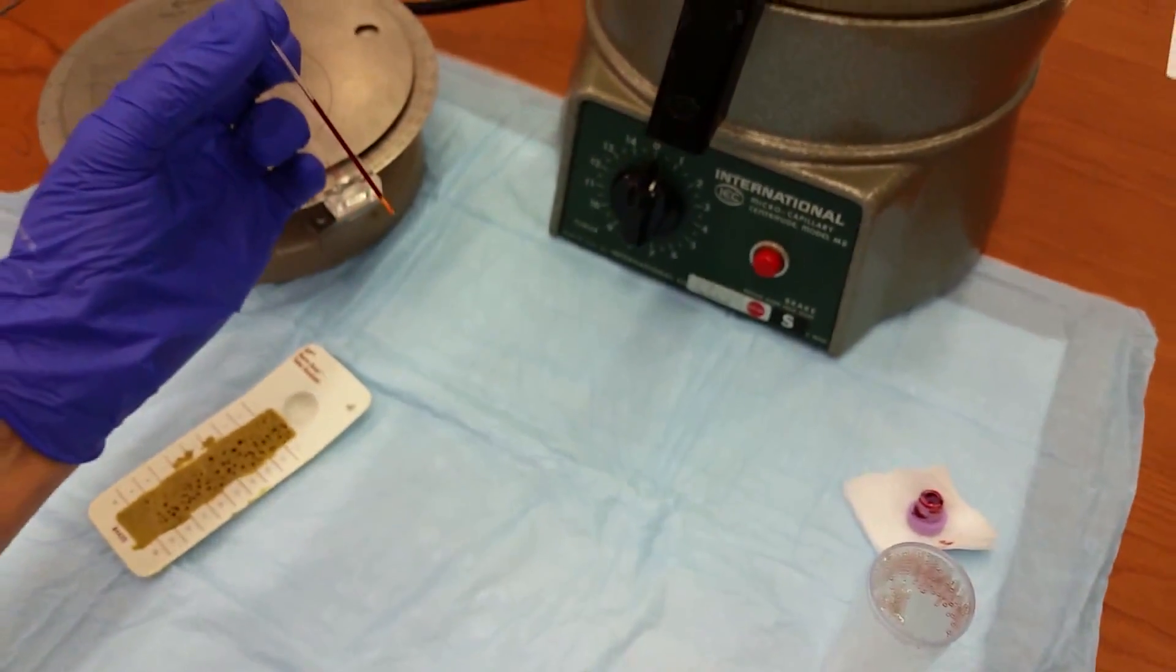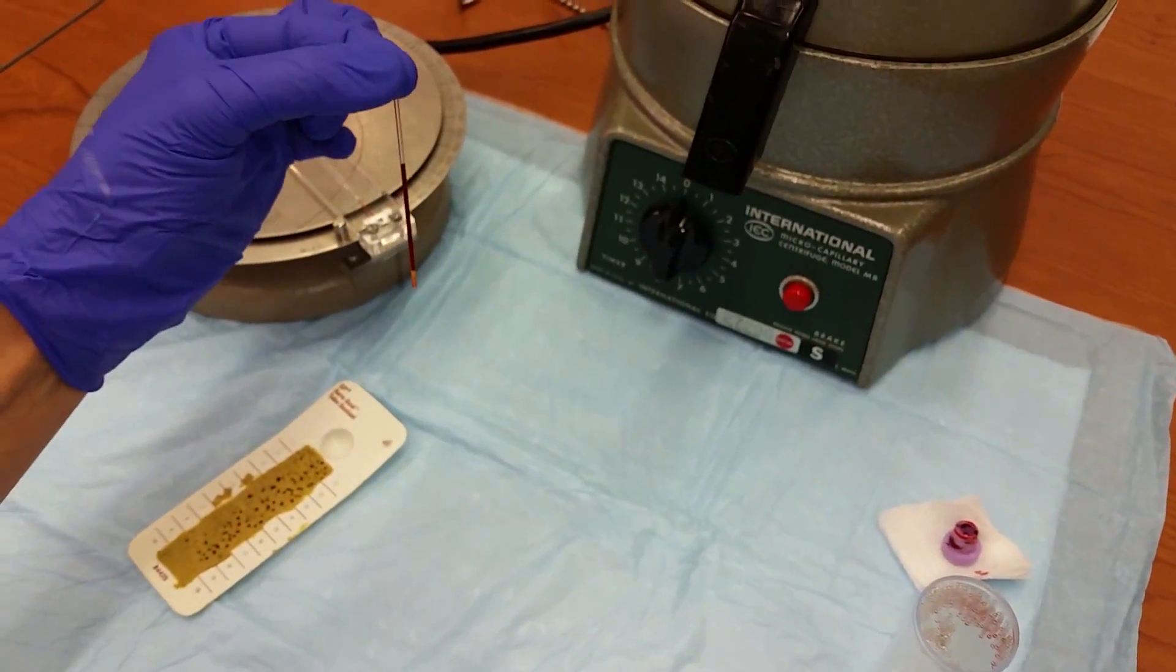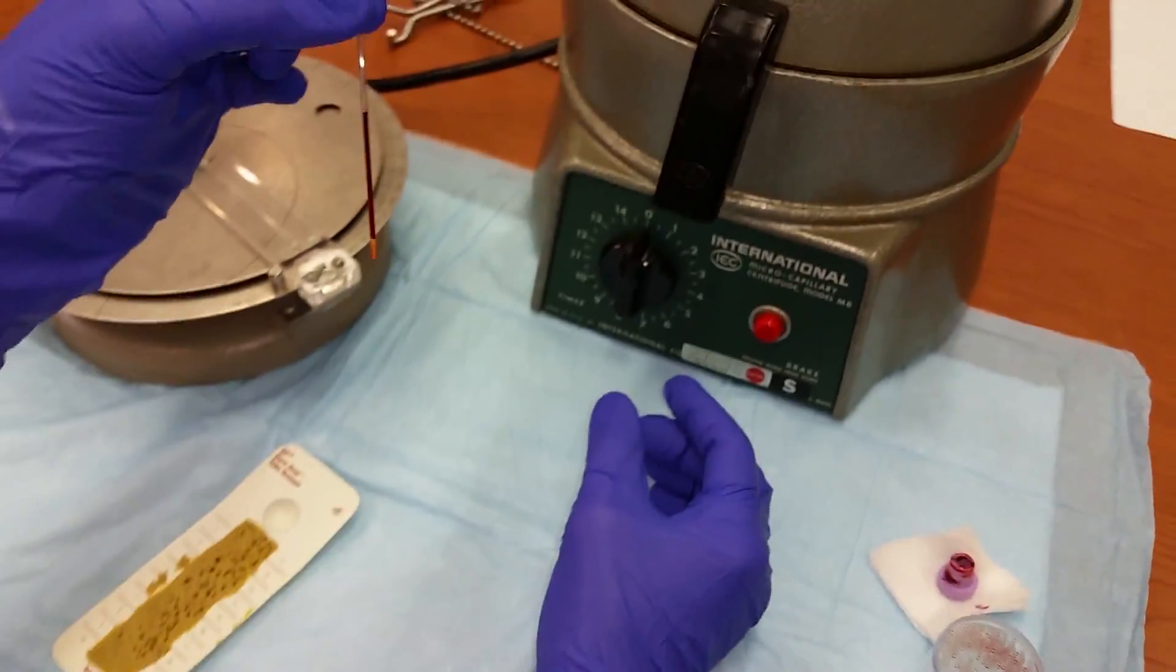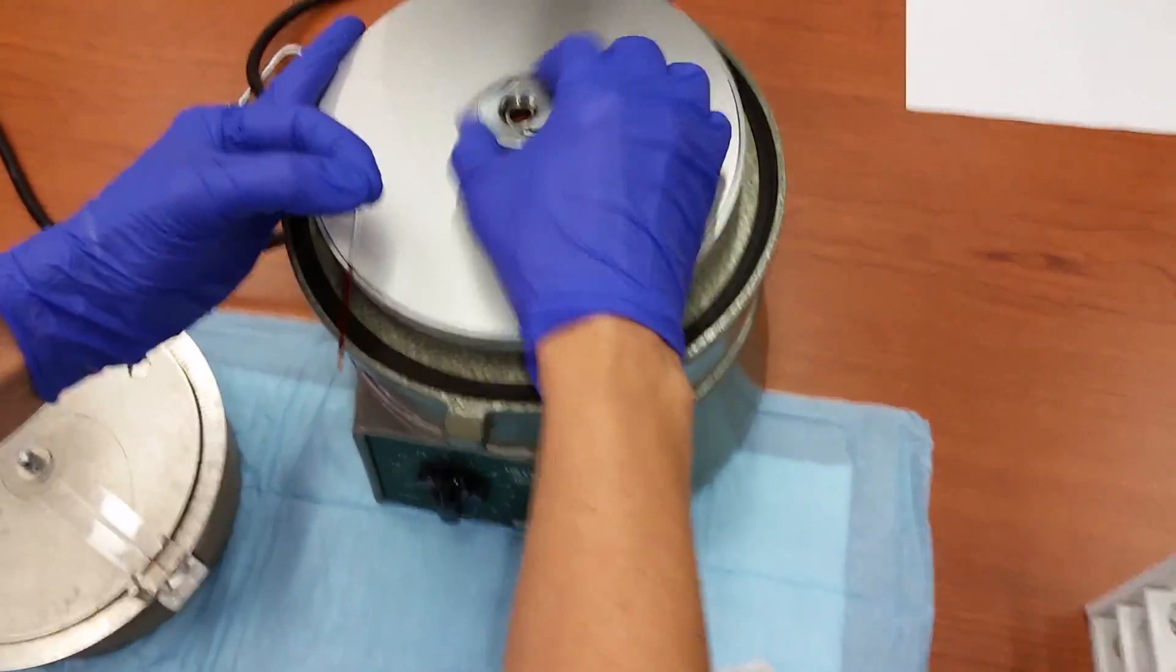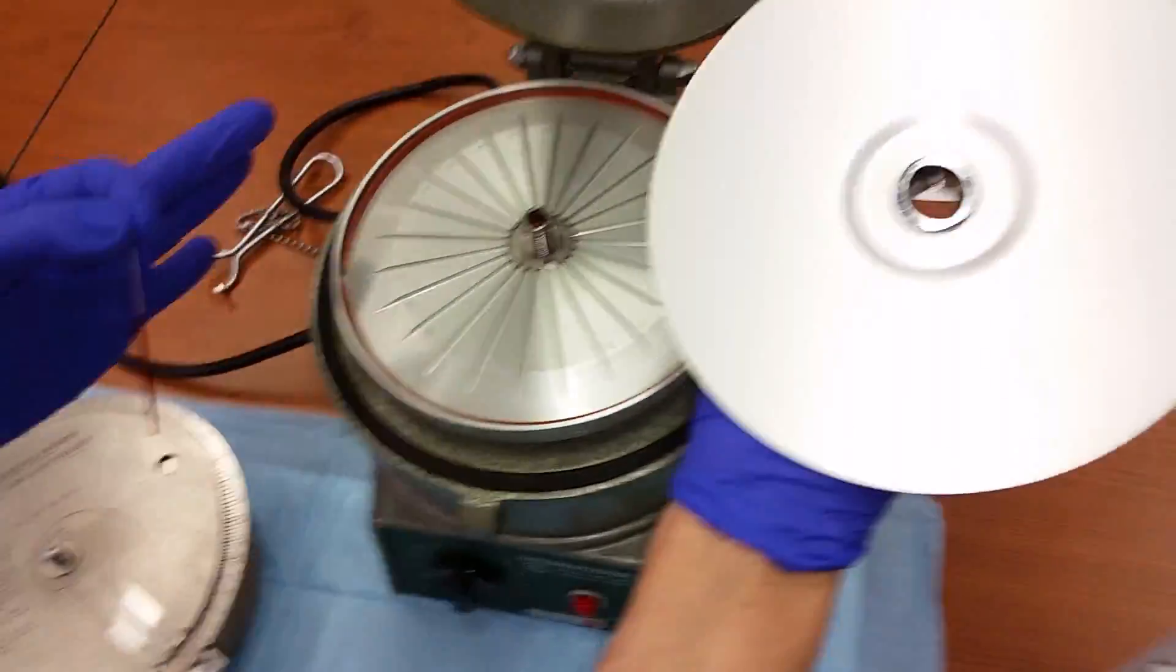We're then going to spin the capillary tube in a microcentrifuge. You first need to remove the top of the centrifuge.